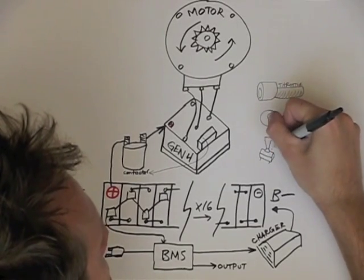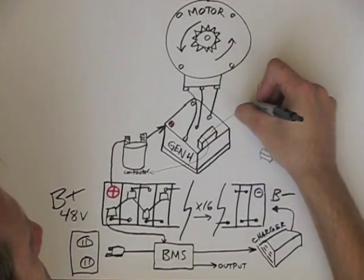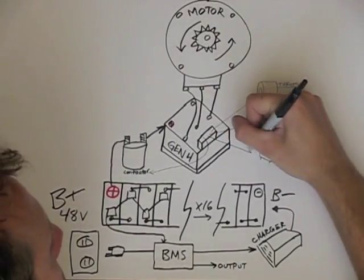Also plugging into the multi-pin connector is the key switch and the enable switch. The key will turn on the controller and the enable tells the controller it's okay to go forward.